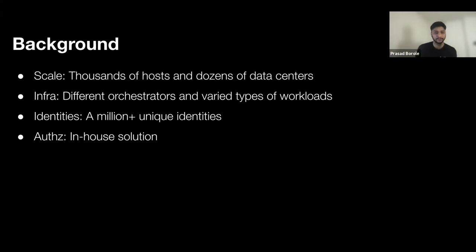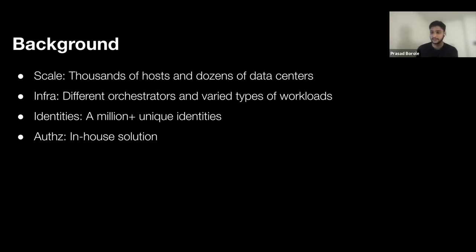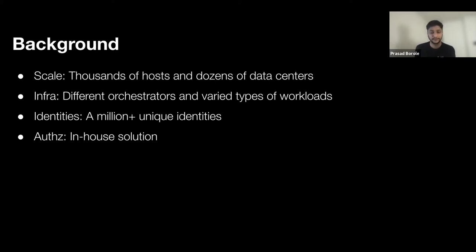Let's look at the scale. Uber has thousands of hosts which have a SPIRE agent running on them, and we operate in dozens of data centers. Our infrastructure is still evolving — it has different orchestrators which schedule different types of workloads. This is an important detail that I'll get back to later. This also means these workloads are going to have different OTC requirements.